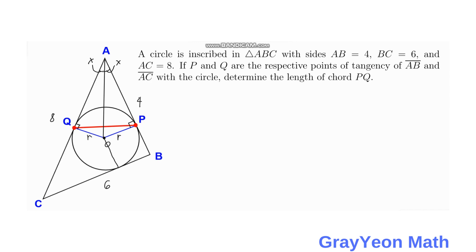If we draw a line from the center of the circle to B, we form two right triangles. If we draw a line from C to the center of the circle, we form again two right triangles — label this as BQR. We then have two triangles: right triangle OQC and ORC, and another pair which is POB and BOR.